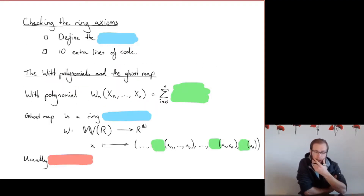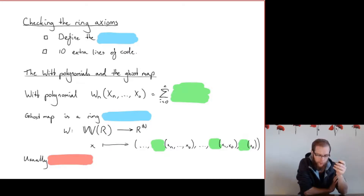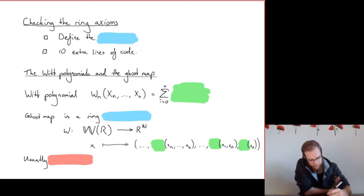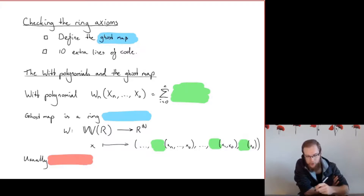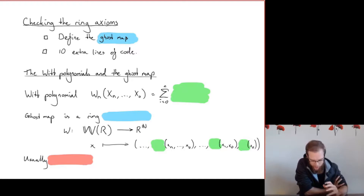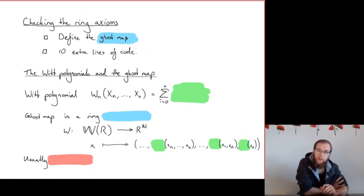Now we want to check the ring axioms, and it would be really painful if we had to go all the way through this inductive procedure of obtaining these polynomials. Luckily we don't have to, because we can define the so-called ghost map. It's not as scary as it sounds, although it does have some ghost-like properties. Once we have this ghost map and some basic properties, it's actually only 10 extra lines of code to check the ring axioms — that the addition and multiplication defined in terms of these polynomials actually satisfy associativity, commutativity, the unit laws, etc.